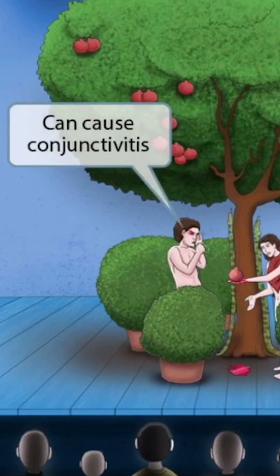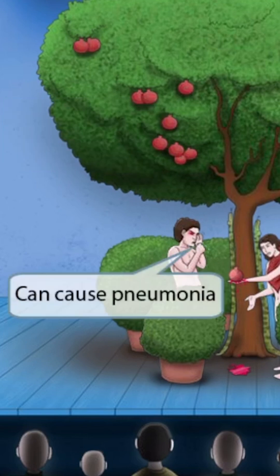In this story, though, who knows if Adam will partake of the fruit? He seems to be having an allergic reaction to it — look at those red eyes and that cough. The red eyes should help you remember that adenovirus can cause conjunctivitis. The cough should help you remember that it can also cause pneumonia.